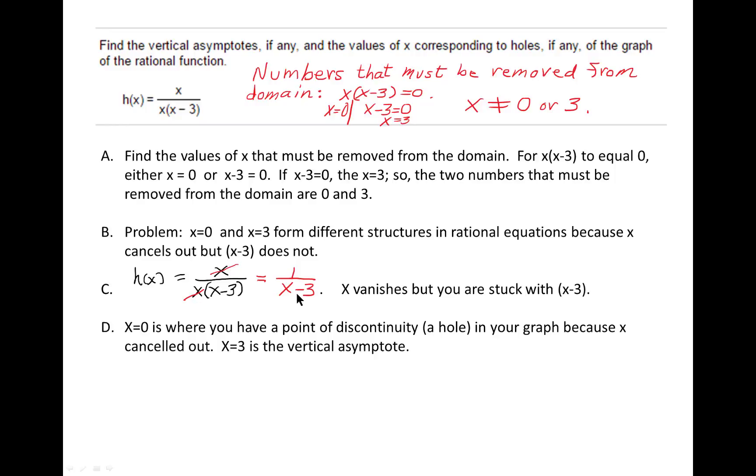So, x minus 3 is going to give us the equation x equals 3, which is the equation of the vertical asymptote. x equals 0, on the other hand, is where our hole is located, and a hole is really a hole. It's a point of discontinuity, that is, it's where the graph is not continuous.